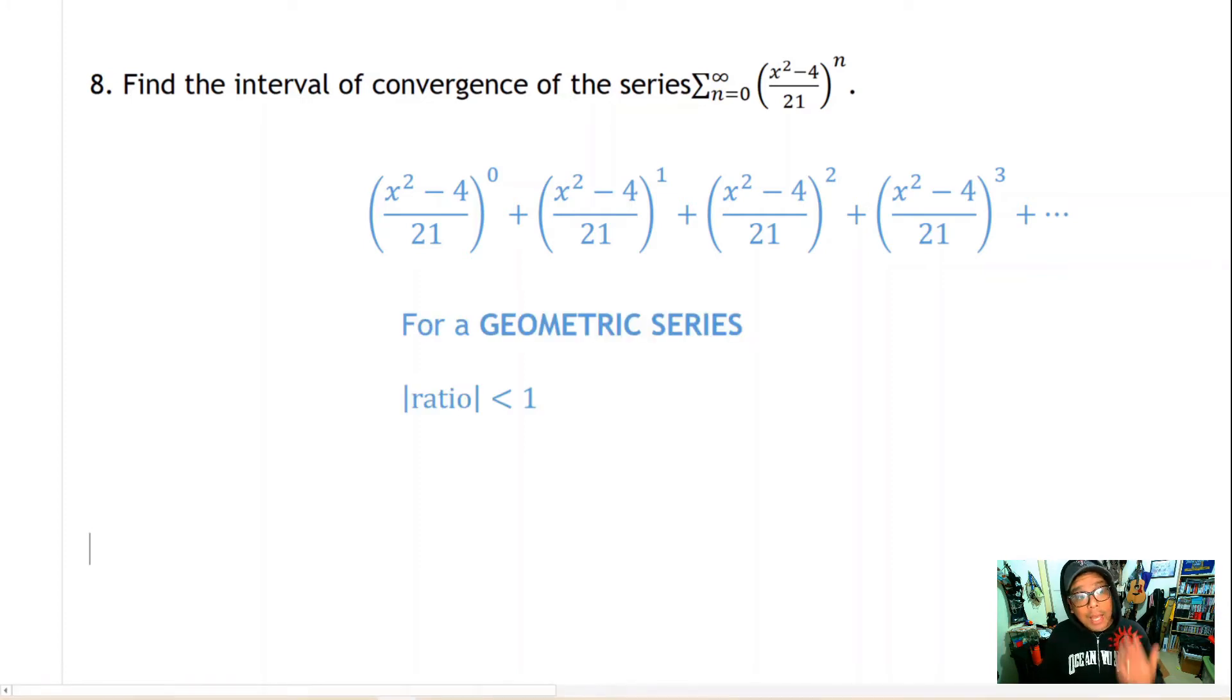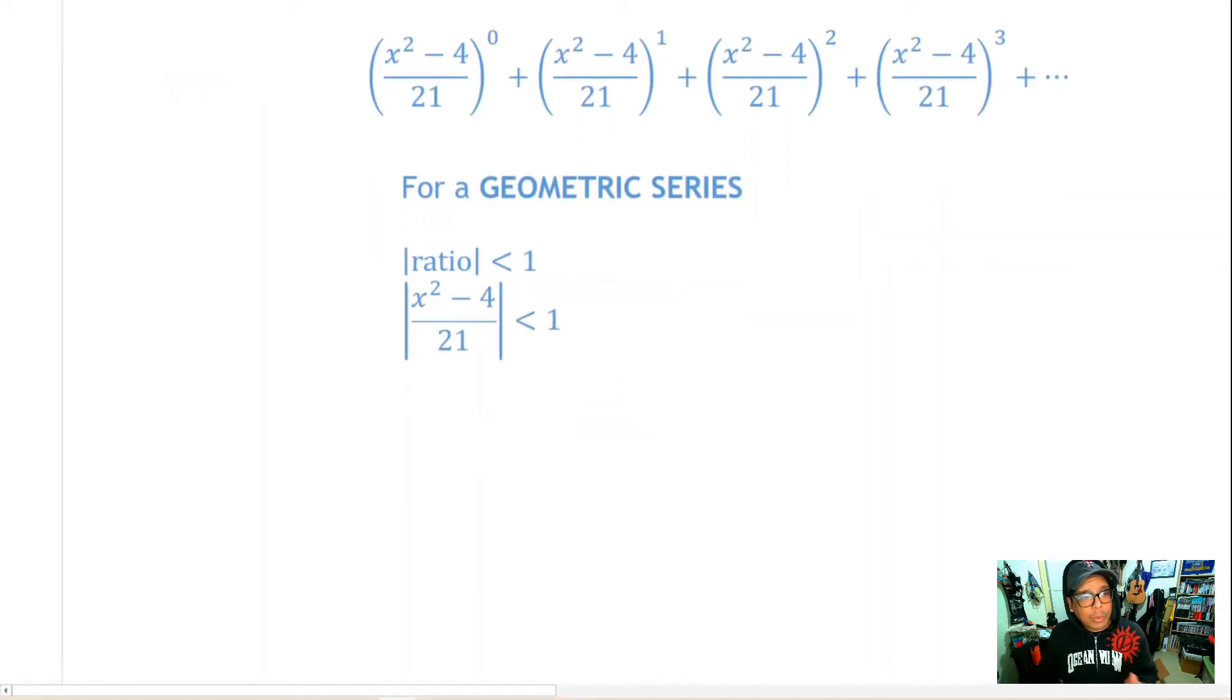For a geometric series the absolute value of the ratio has to be less than 1 for convergence. Let's just substitute in our ratio. The absolute value of (x² - 4)/21 needs to be less than 1, which simplifies into the absolute value of x² - 4 needs to be less than 21.